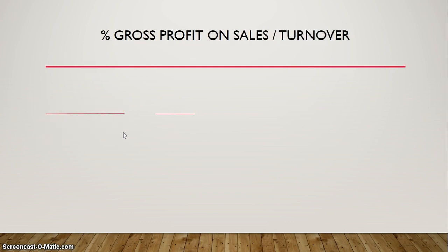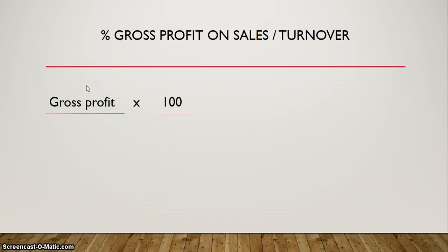For the percentage gross profit on sales, it is times 100 over 1, with gross profit over sales. So that is how you are going to calculate it: gross profit on sales times 100 over 1.